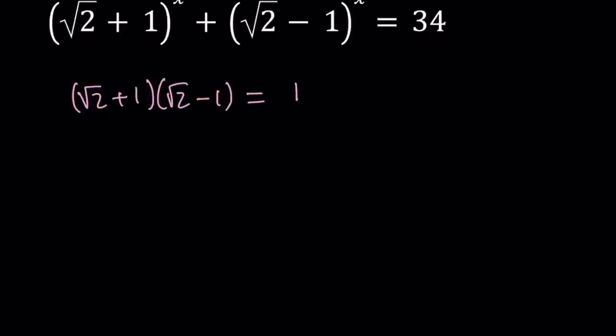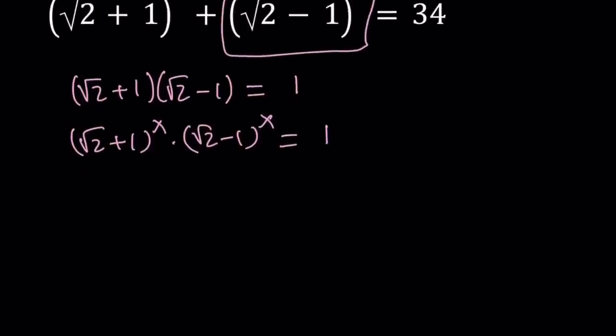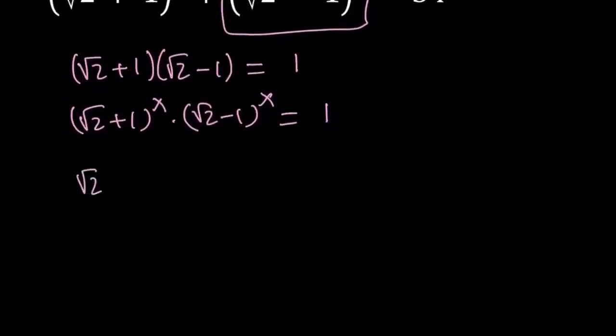So, what happens if you raise both sides to the power x? Nothing changes on the right hand side. So we can safely say that these two, when multiplied, will give us 1 again. This allows us to write the second one, which is this one right here, as the reciprocal of the first one. So, let's go ahead and do that. Square root of 2 minus 1 to the power x equals 1 over square root of 2 plus 1 to the power x.